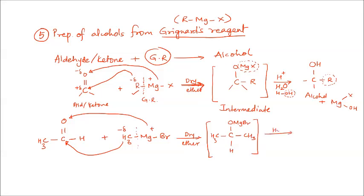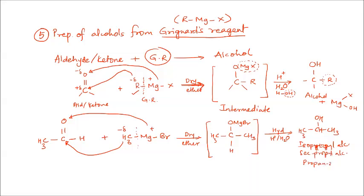In the next step, we do acid hydrolysis. The product is a carbon with CH3, CH3, and H groups attached, with OH — giving isopropyl alcohol, also called secondary propyl alcohol or propan-2-ol. The side product is Mg(Br)OH. So taking acetaldehyde with CH3MgBr gives us isopropyl alcohol, which is a secondary alcohol.